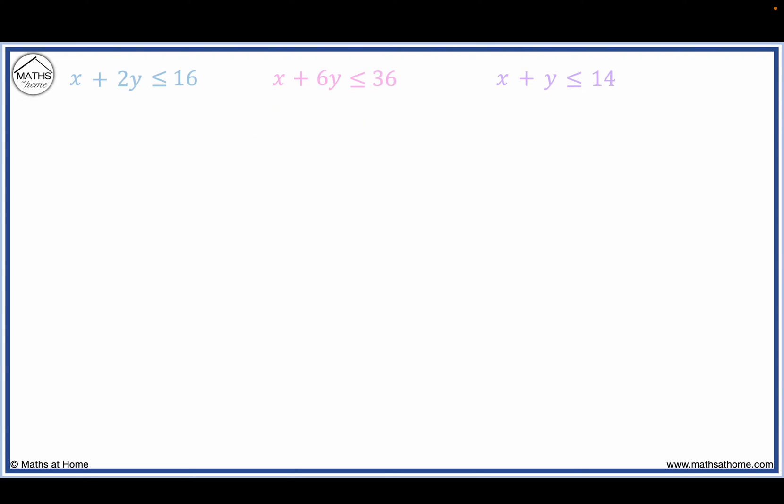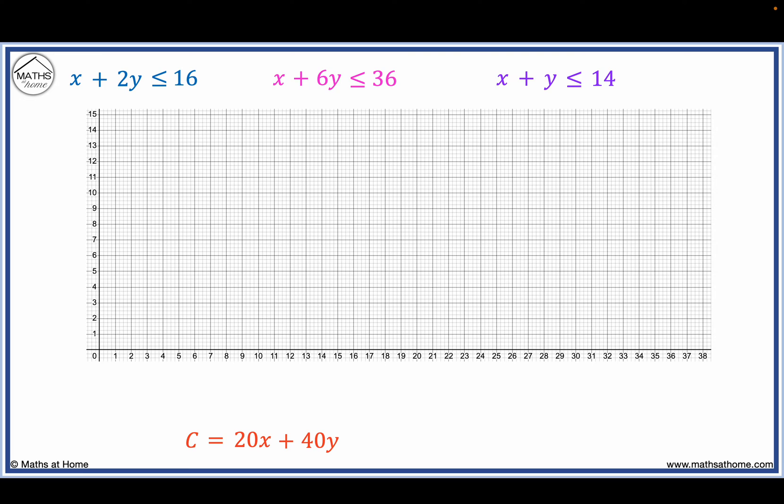We will plot these three constraint equations. In the first equation, the x-intercept is 16 divided by 1 equals 16. The y-intercept is 16 divided by 2 equals 8. Then 36 divided by 1 equals 36, and 36 divided by 6 equals 6.